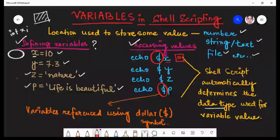Similarly, here it will be returning 7.3 and then it will be printing nature and here it will be giving you the output as life is beautiful. So these are the two ways of defining the variable and accessing the values stored in the variable.